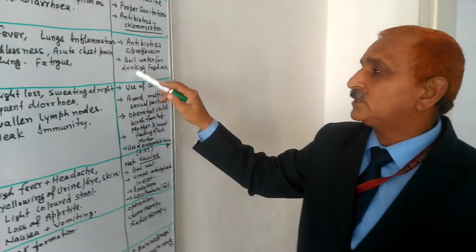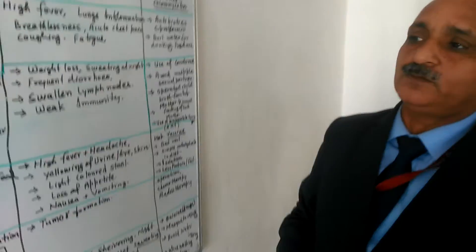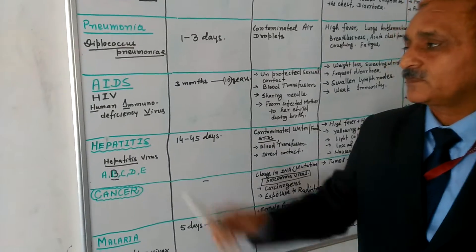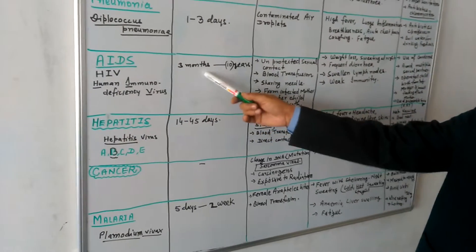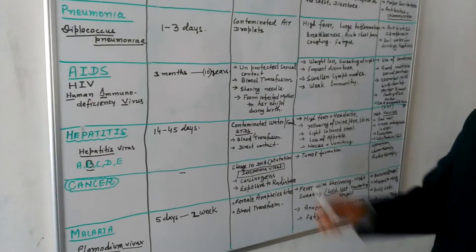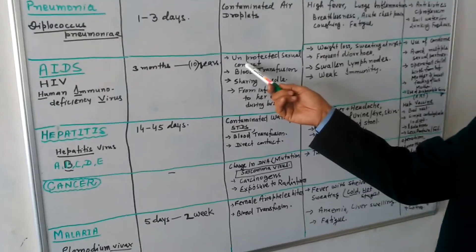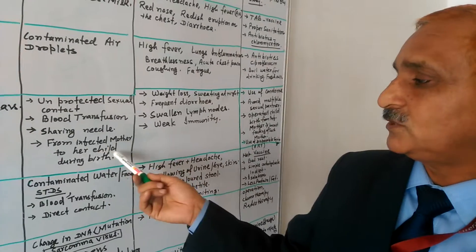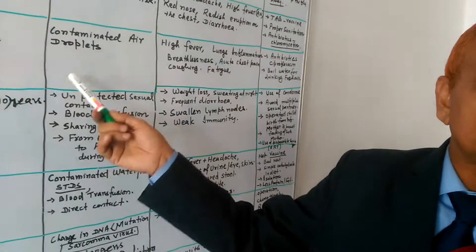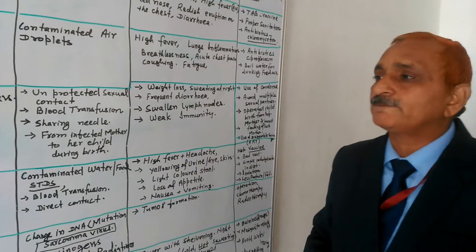Next is your AIDS. It's caused by HIV, human immunodeficient virus. 3 months to 10 years is the period, incubation period. Unprotected sexual contact, blood transfusions, sharing needles from infected mother to the child. These are the only four reasons of this AIDS.